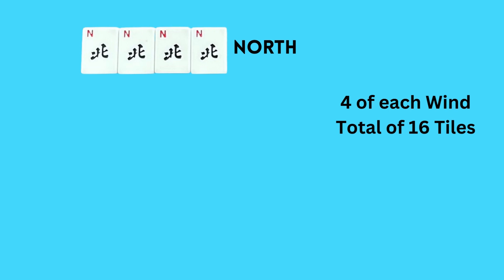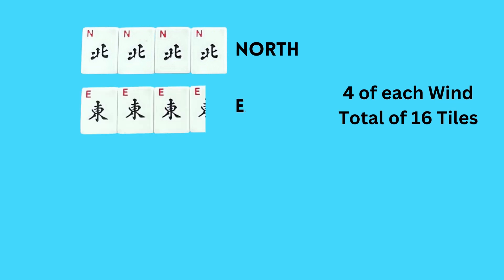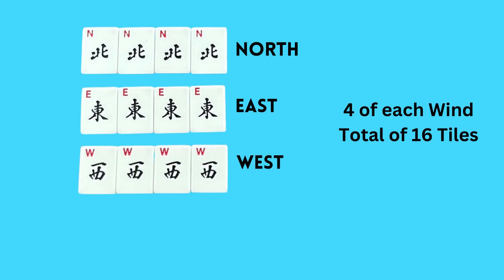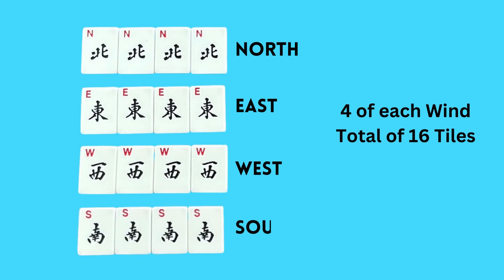Then we have our wind tiles. We have our north winds, and there are four of each of these wind tiles. Then we have our east tiles, and there are four of each of these as well. The next wind tiles are the west, and there are also four of these. Then we move on to the last of our wind tiles, and that is our south. There are four of these as well. We now have 16 in all.